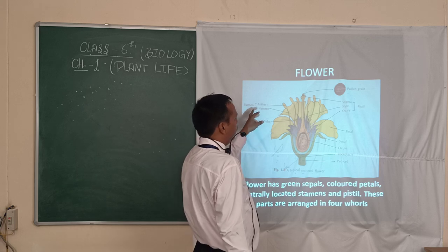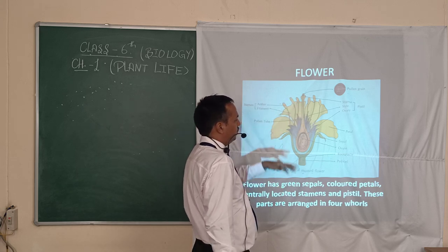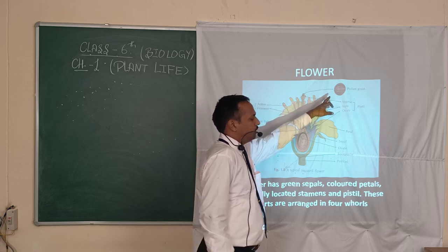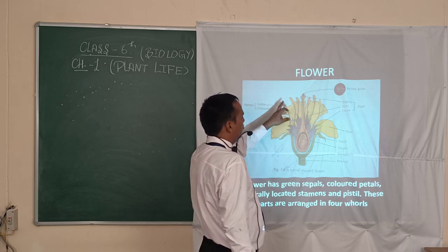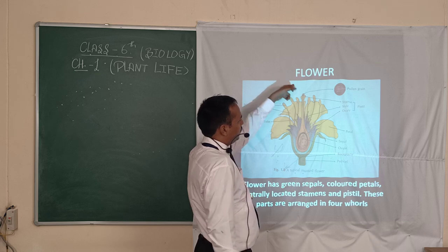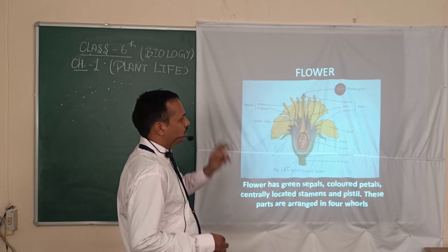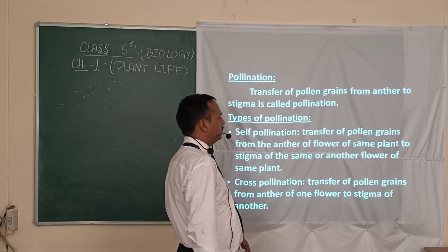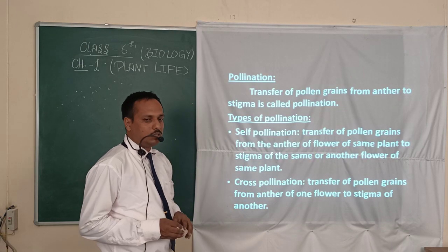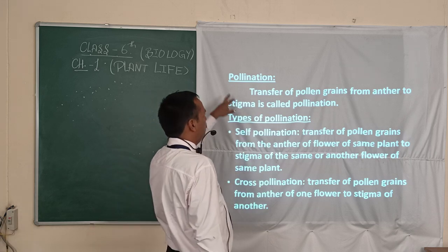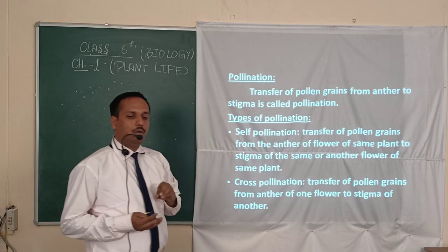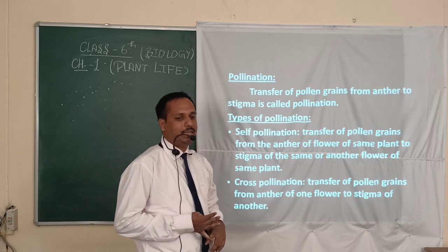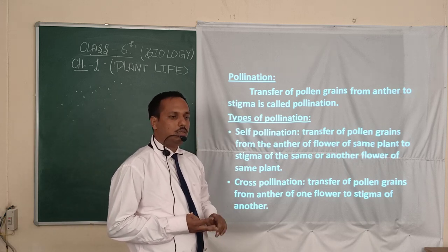When the pollen grains present in the anther are transferred to the stigma and then through the pollen tube, this process is called pollination. Pollination means the transfer of pollen grains from the anther to the stigma.